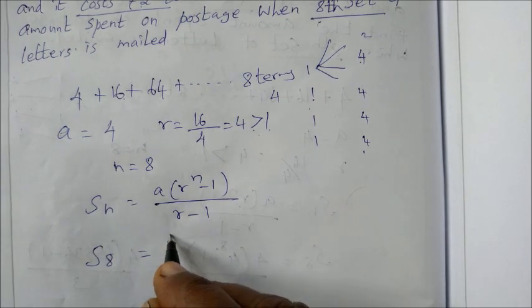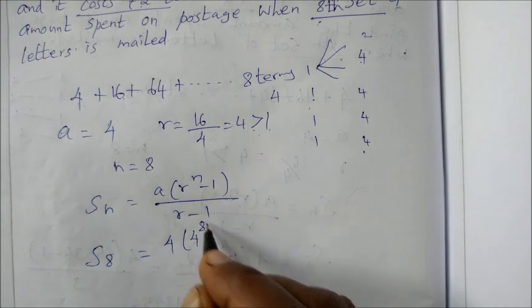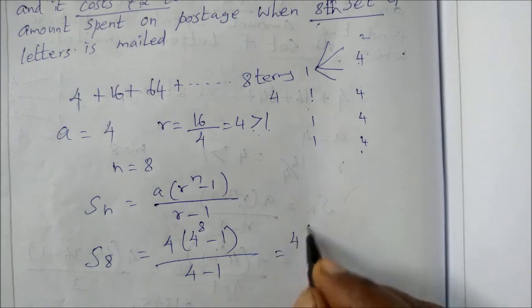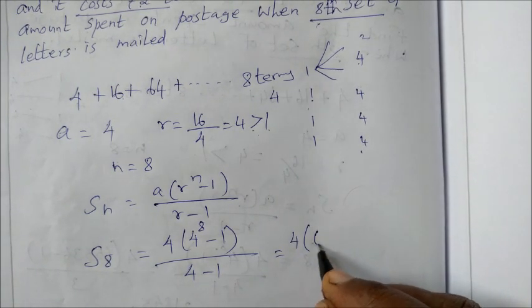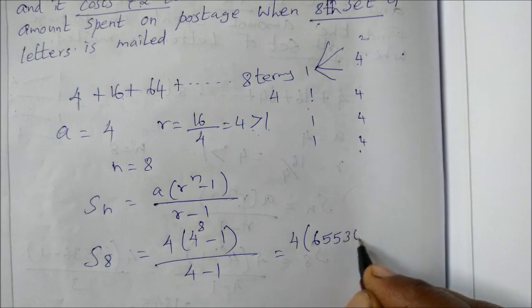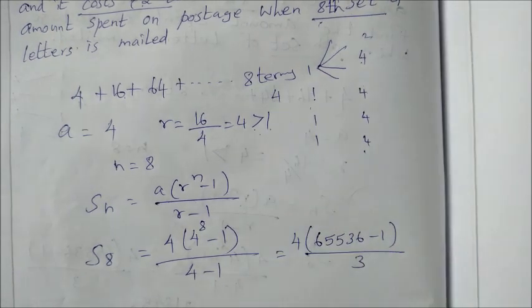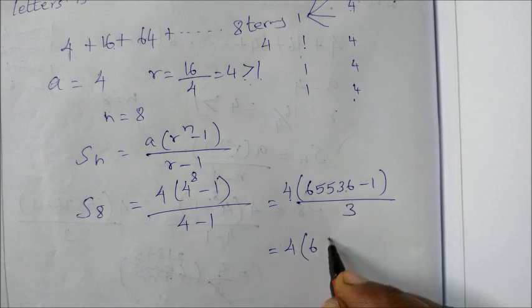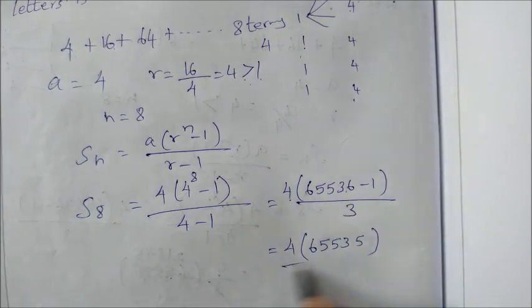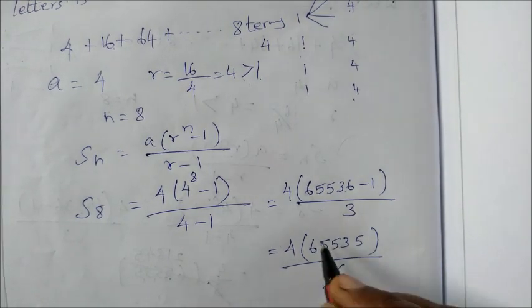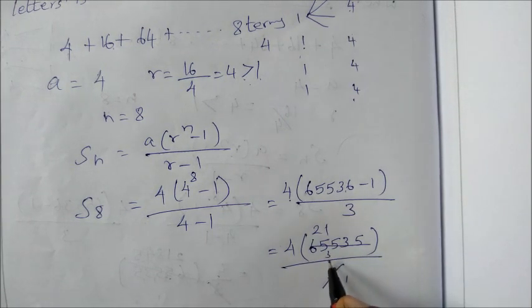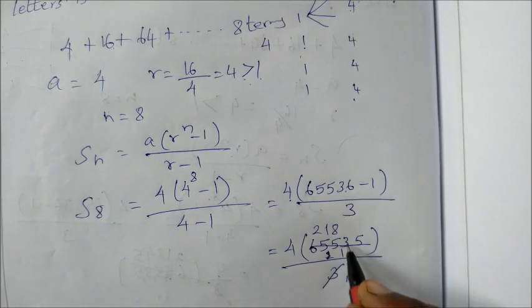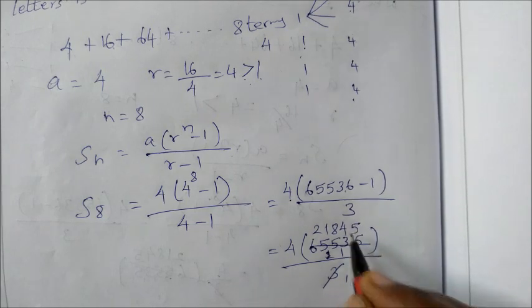So S8 equals a is 4 into 4 to the power 8 minus 1 divided by 4 minus 1. So 4 into 4 power 8 is 65536 minus 1 divided by 3. So 4 into 65535 divided by 3. Dividing 65535 by 3, we cancel and get quotient with balance.